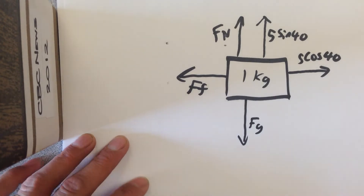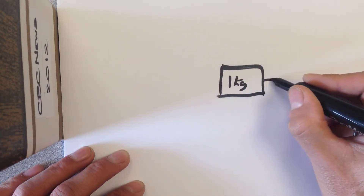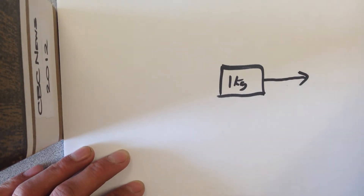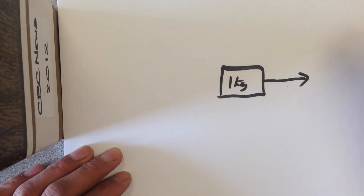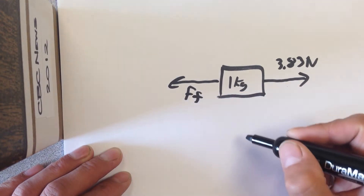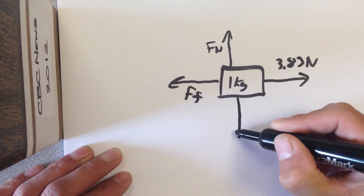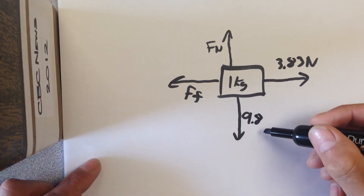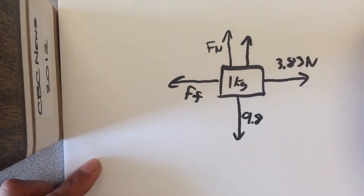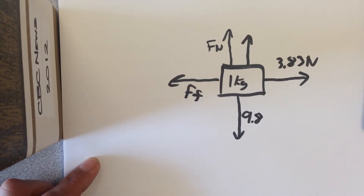Rewriting with numbers: a 1 kilogram block has a parallel component of 5 times cosine of 40, which is 3.83 Newtons forward. The force of friction is not yet known, pushing back. The normal force is also unknown. The force of gravity is 9.8 Newtons (9.8 times 1). The upward component of the applied force — which could be a rope or cable — is 5 times sine of 40, which equals 3.21 Newtons.